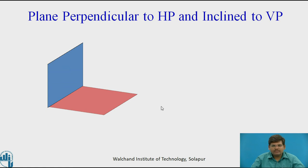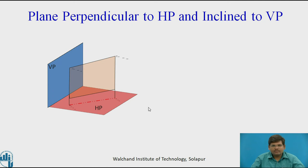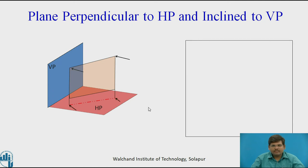Next: a plane perpendicular to HP and inclined to VP. The reference planes are HP and VP. This is the plane which is perpendicular to HP and inclined to VP. The projection of this plane on HP gives an inclined line in the top view. This kind of plane is used to get the sectional front view or sectional side view. This is the XY line with HP and VP in two dimensions, showing the required cutting plane inclined to VP and perpendicular to HP.